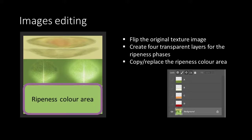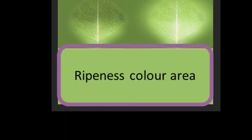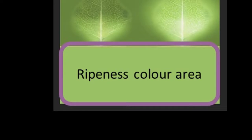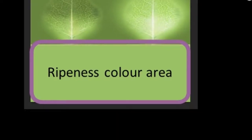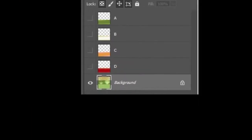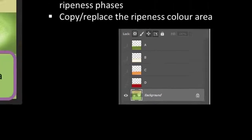We isolate the lower third of the image that contains the color of the fruit, make it transparent, and add four layers on top for the four different colors. Each layer will contain its own color representing the ripeness phase of the fruit.